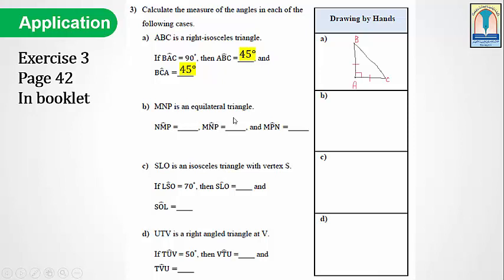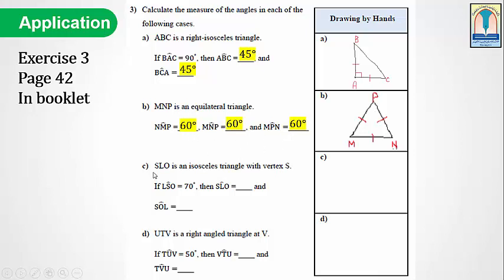B: MNP is an equilateral triangle. We will draw this triangle. The measure of each angle in an equilateral triangle is equal to 60 degrees. Then each angle is equal to 60 degrees.